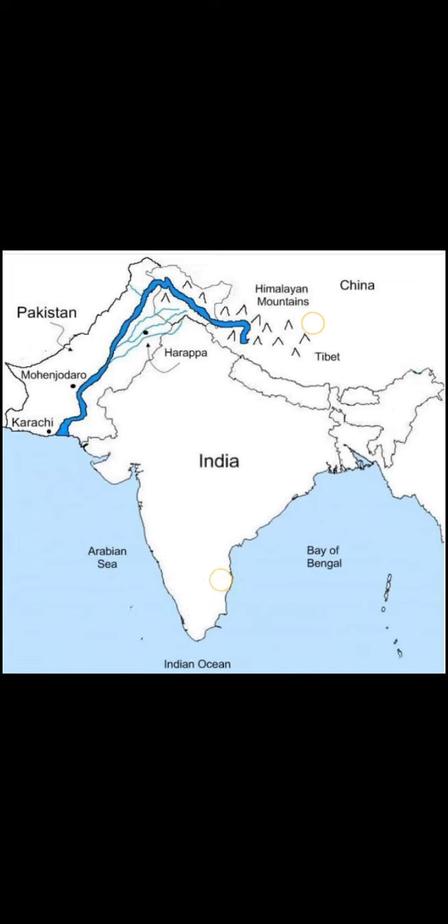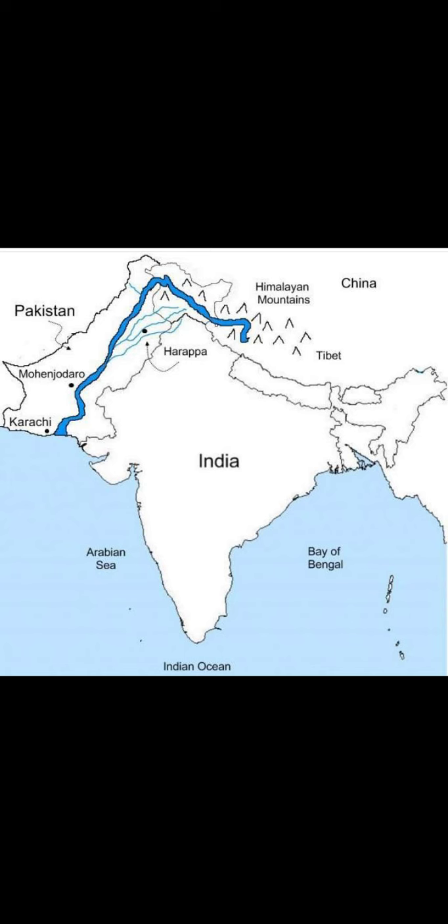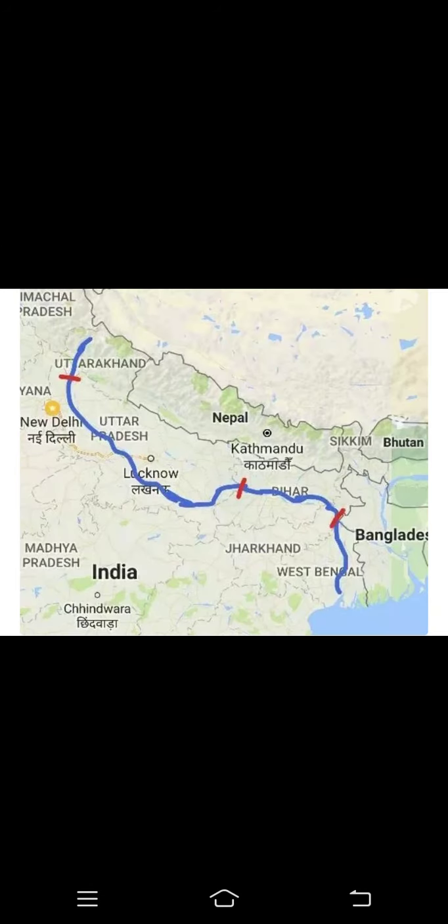The Ganga is the largest river in our country. Ganga originates from the Gangotri glacier in the Himalayas. When that glacier melts, it forms the Ganga River. Another major tributary of Ganga flows through the northern part — through Uttar Pradesh, Lucknow, Kathmandu, then Bihar, then Bangladesh and West Bengal — and it discharges its water into the Bay of Bengal.